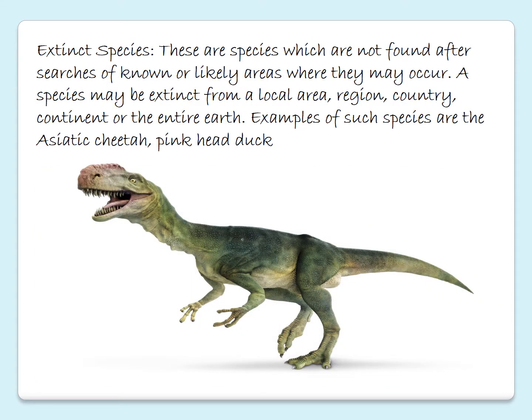Next, and one of the important species categories, is extinct species. These are species which are not found after a search of known or likely areas where they may occur. A species may be extinct from a local area, region, country, continent, or the entire earth. Examples of such species are the Asiatic cheetah, pink-headed duck, and dinosaurs, of course.